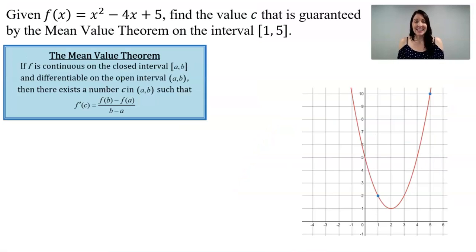Given f(x) equals x squared minus 4x plus 5, find the value c that is guaranteed by the mean value theorem on the interval [1,5].